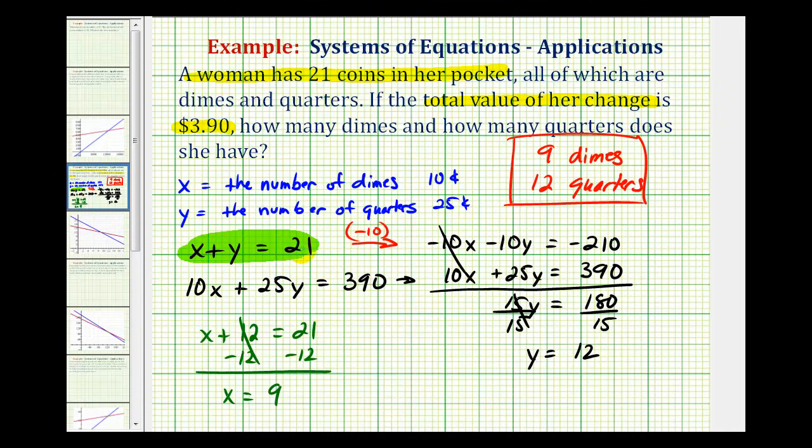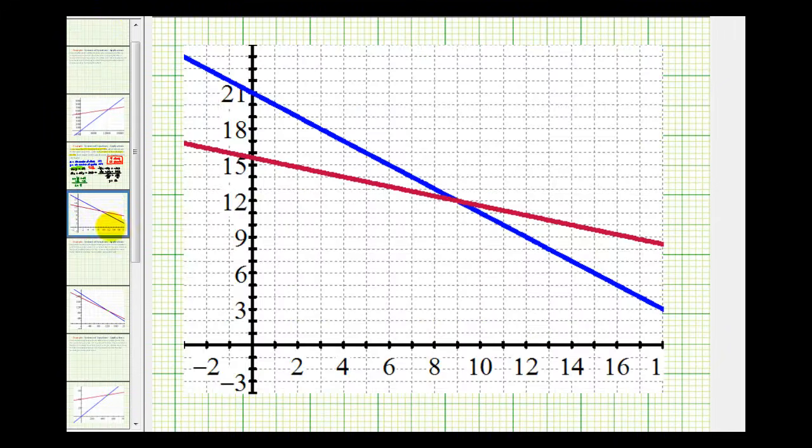Now let's also verify this graphically. Remember if we graph these two linear equations on the same coordinate plane, the point of intersection would represent the solution. So here's the equation x plus y equals 21. And here's the equation 10x plus 25y equals 390.